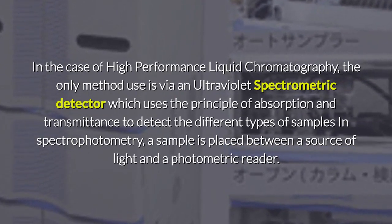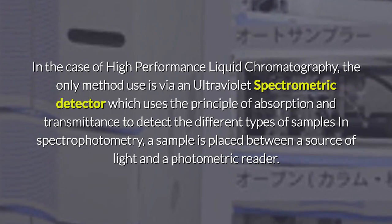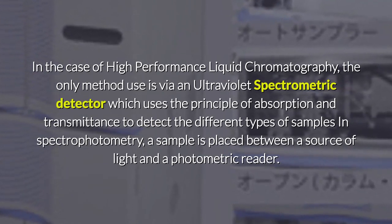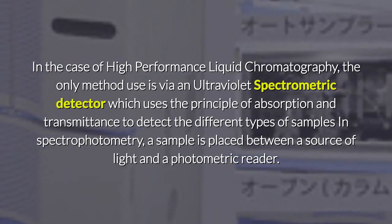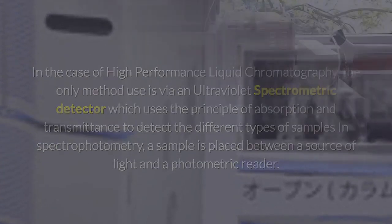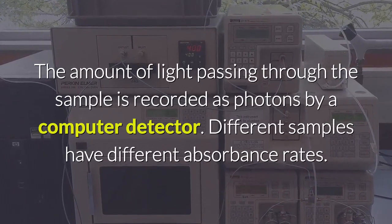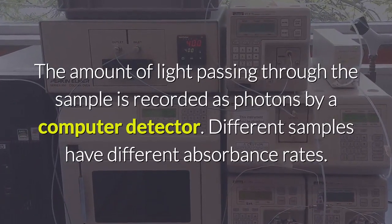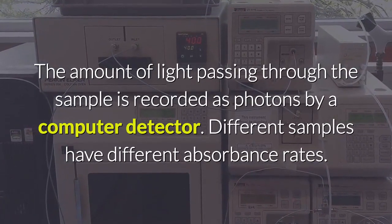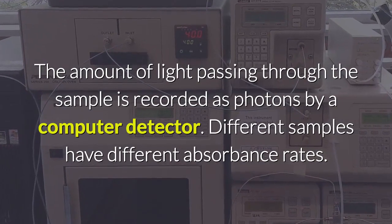In spectrophotometry, a sample is placed between a source of light and a photometric reader. The amount of light passing through the sample is recorded as photons by a computer detector, and different samples have different absorbance rates.